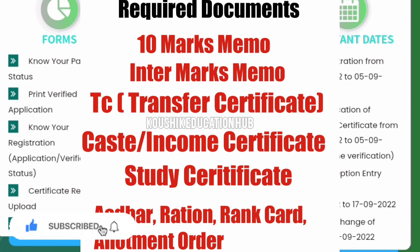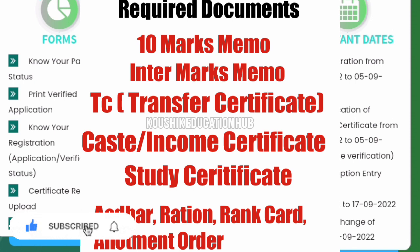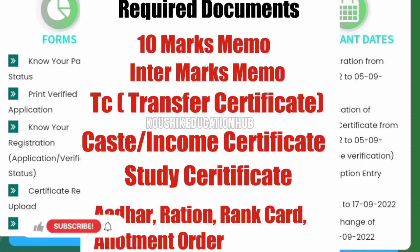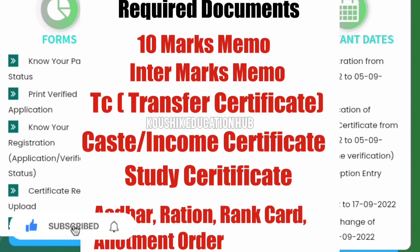The next is Allotment Order. Just like this video, you are going to get a PDF download. Then you will have to complete your document. The required documents — you have to complete rank card and allotment order. If you don't have to complete your file meds, you will complete the rank card and allotment order. So you have to complete your photos. Please like and subscribe to our channel.